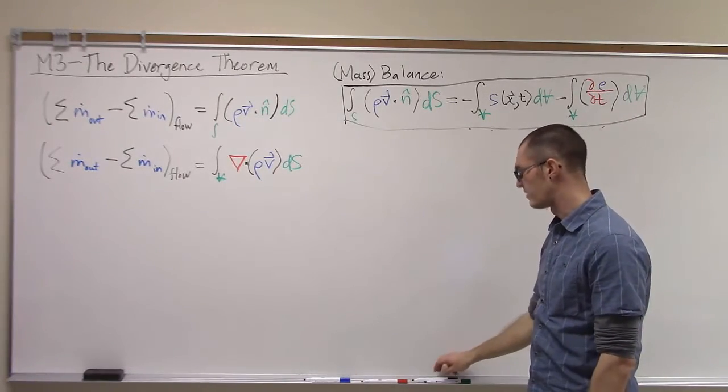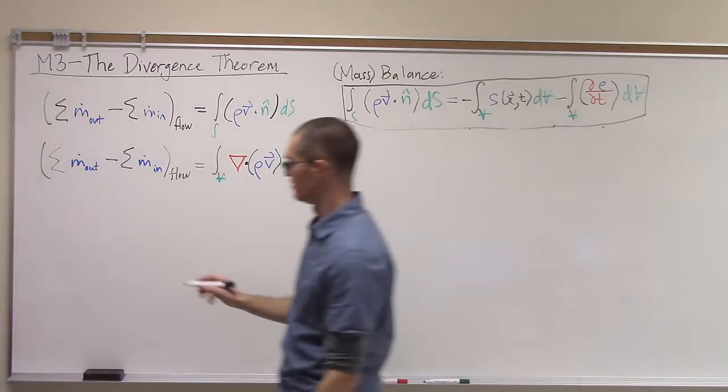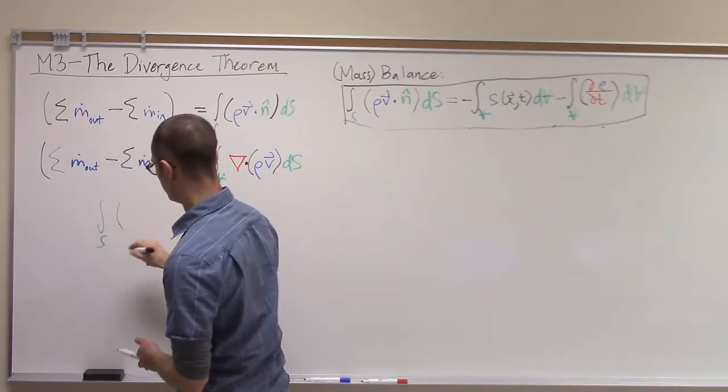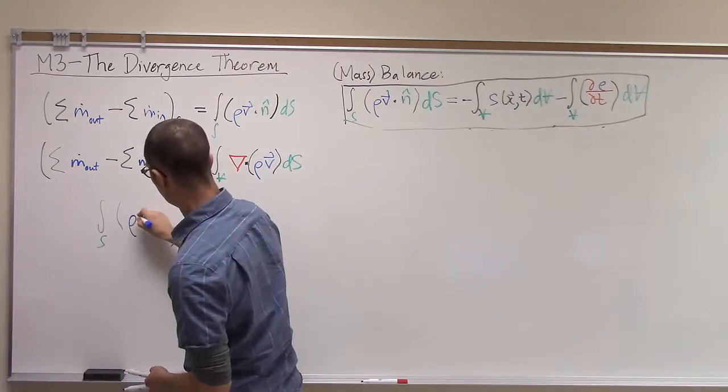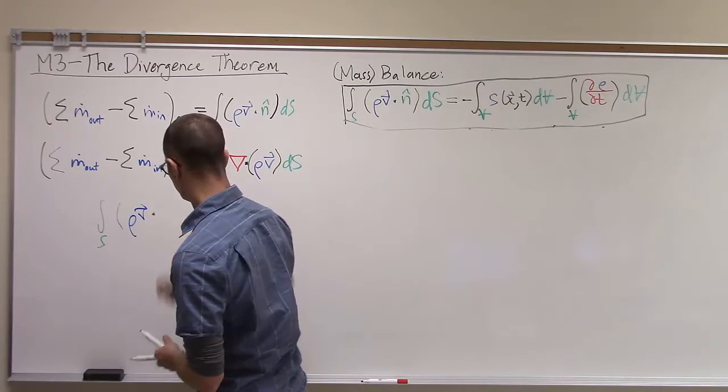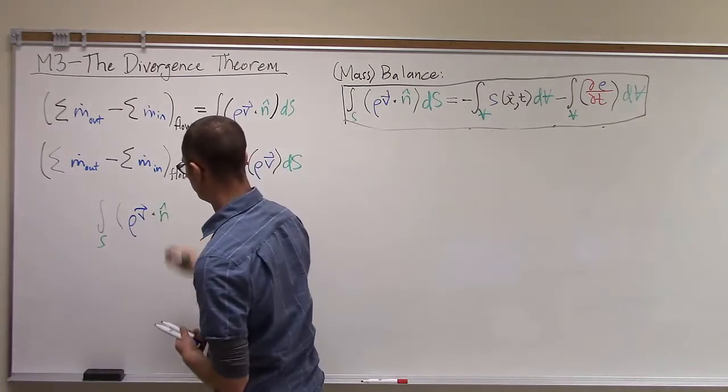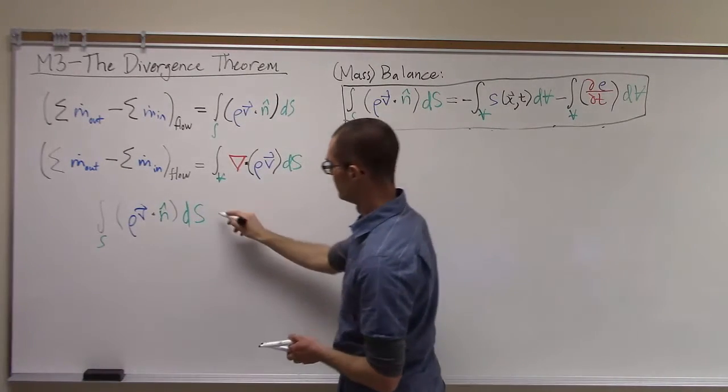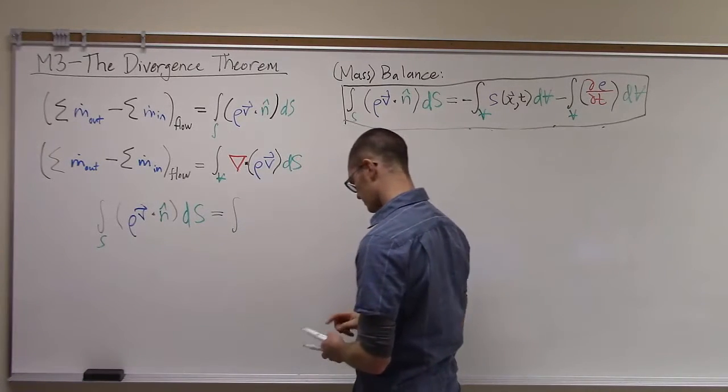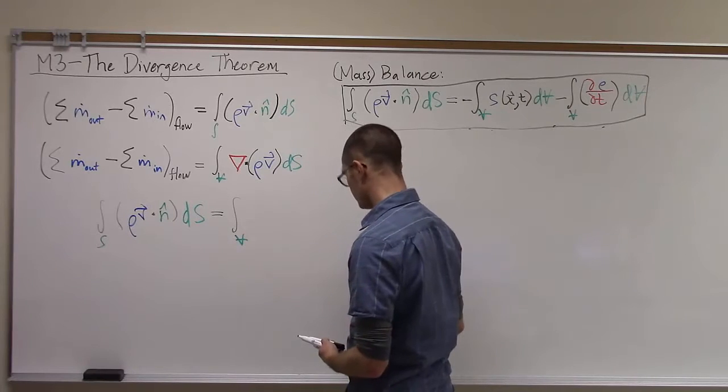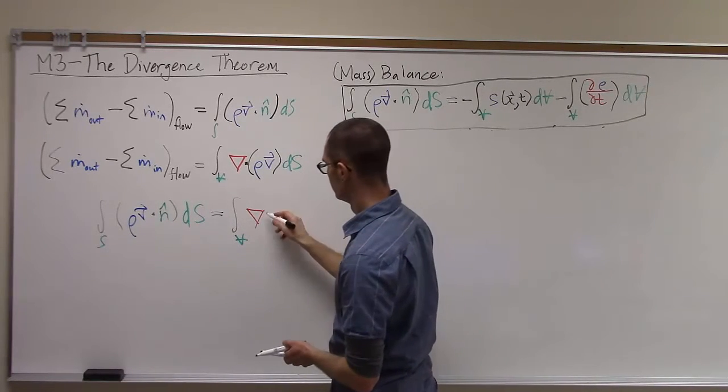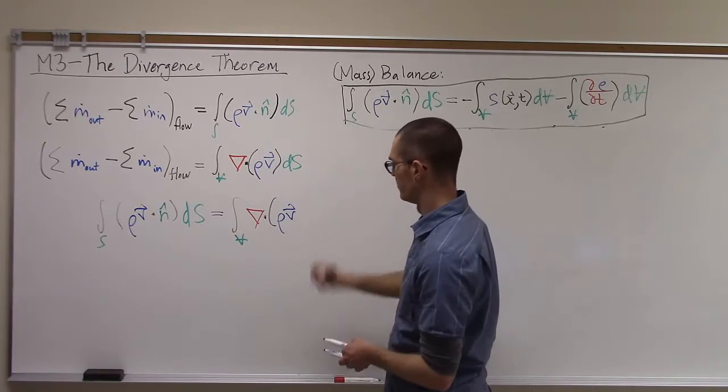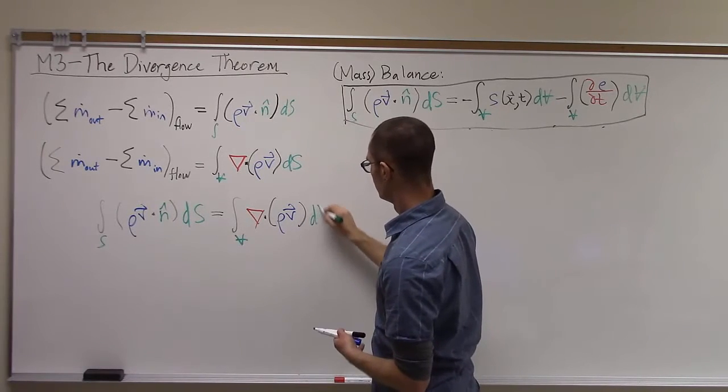So this is an important relationship. Now we can write a direct equivalence between these two. The integral over the surface of ρv dotted with the outward normal is equal to the integral over the volume of the divergence of that flux rate at each point within the volume, dV.